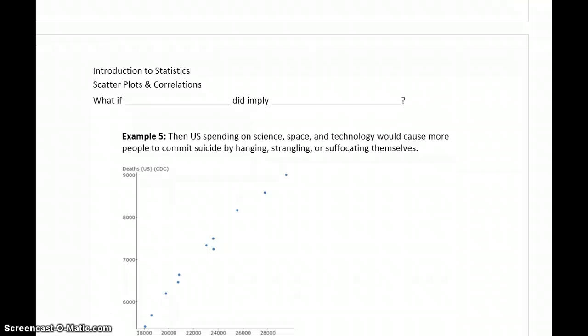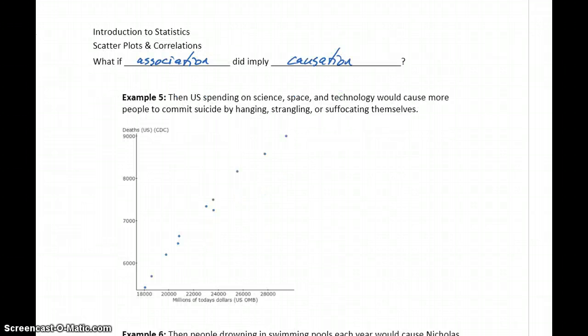We just said it doesn't prove the cause and effect relationship, but what if we just assume for a moment that evidence of an association did imply causation? What sort of implications would that have?